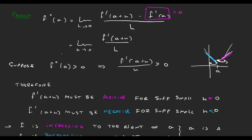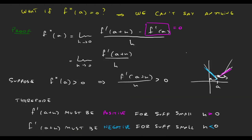If the second derivative was negative, then this other term would be negative, and f prime of a plus h must be positive for negative h and negative for positive h. This means the slopes are positive to the left and negative to the right, so the function does something like this — it's a maximum.